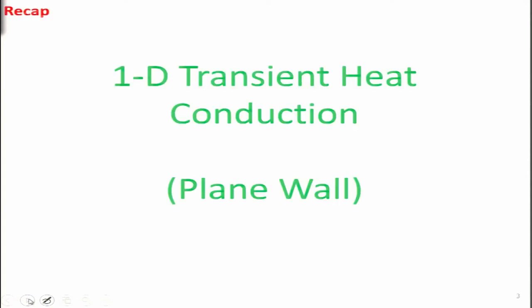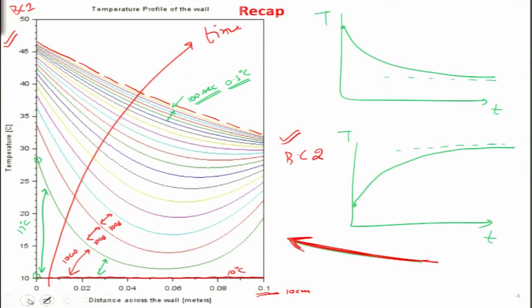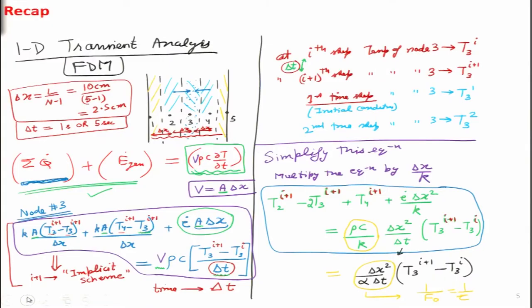In that method we had completed the matrix formation of 1D steady state and we had started the 1D transient heat conduction. This is the typical result that we obtain for transient heat conduction inside a plane wall. We are assuming one-dimensional heat conduction taking place, as shown by the red arrow. This progression of the red arrow indicates the increase in time, and we got very good results for this particular exercise.